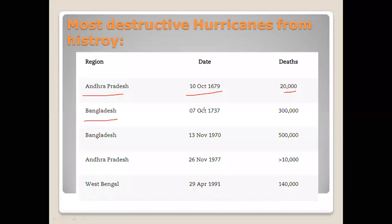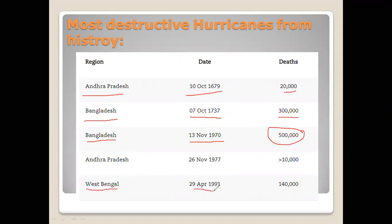Here is a list of the most destructive hurricanes from history. At Bengal (now Bangladesh) on 7th October 1737, it killed 3 lakh people. Again in Bangladesh on 13th November 1970, it killed 5 lakh people. At West Bengal on 29th April 1991, it killed 140,000 people.